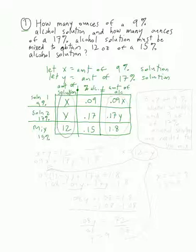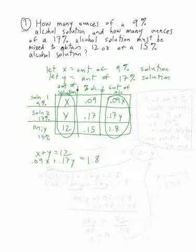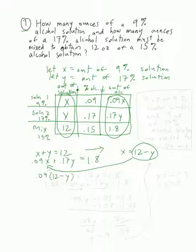Now what are our two equations? The top two rows have to add up to the third. So we get x plus y equals 12, and 0.09x plus 0.17y equals 1.8. I'm going to use substitution to solve this. From the first equation, x equals 12 minus y. I substitute that into the second equation and get 0.09 times (12 minus y) plus 0.17y equals 1.8.